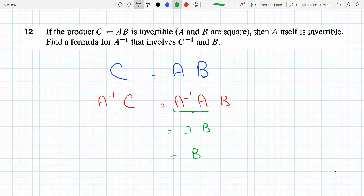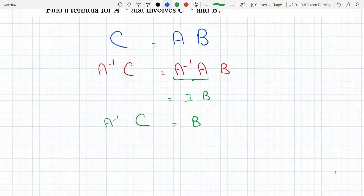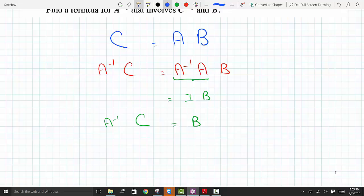And so now we have A inverse C equals B. Now at this stage, what I could do to find A inverse is post-multiply both of these by C inverse, so I can eliminate the C.